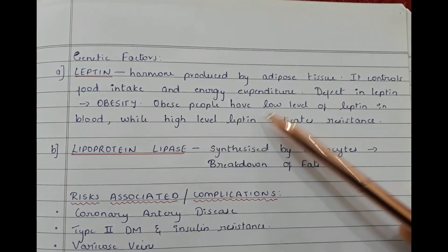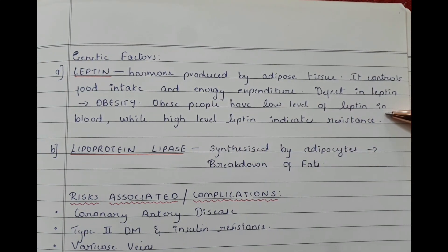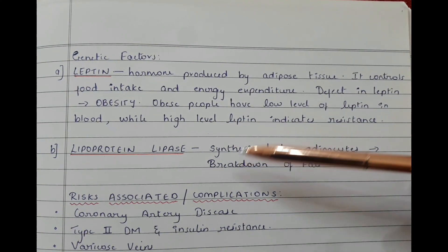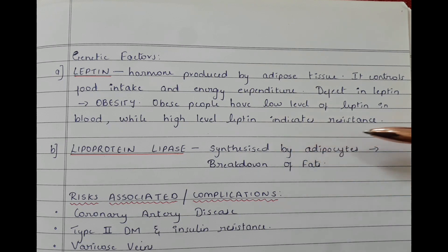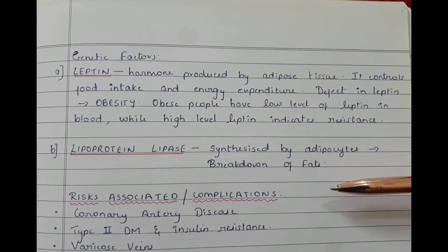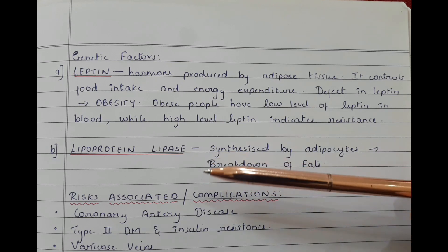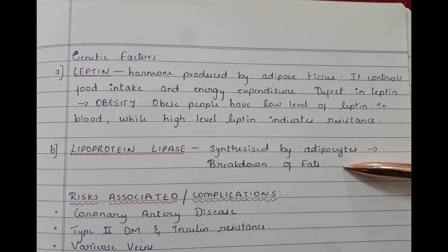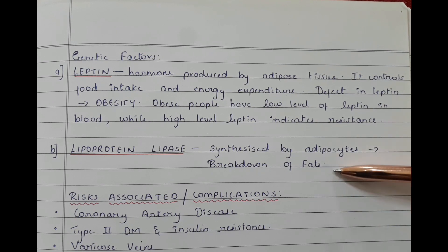Obese people have low levels of leptin in the blood, while a high leptin level indicates resistance. The second genetic factor is lipoprotein lipase. Lipoprotein lipase is synthesized by adipocytes and helps in the breakdown of fats.